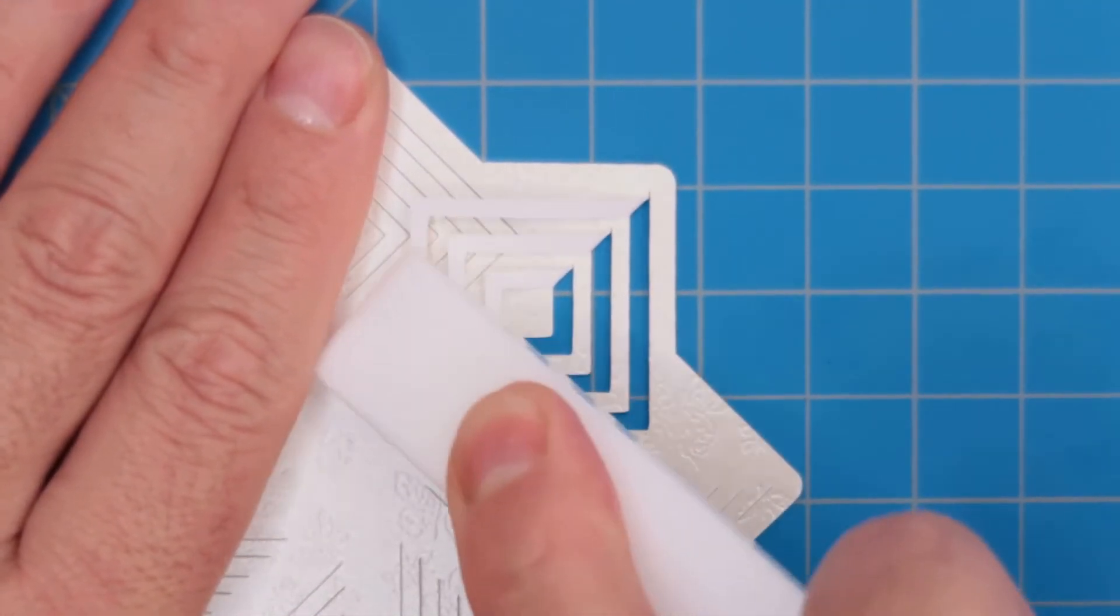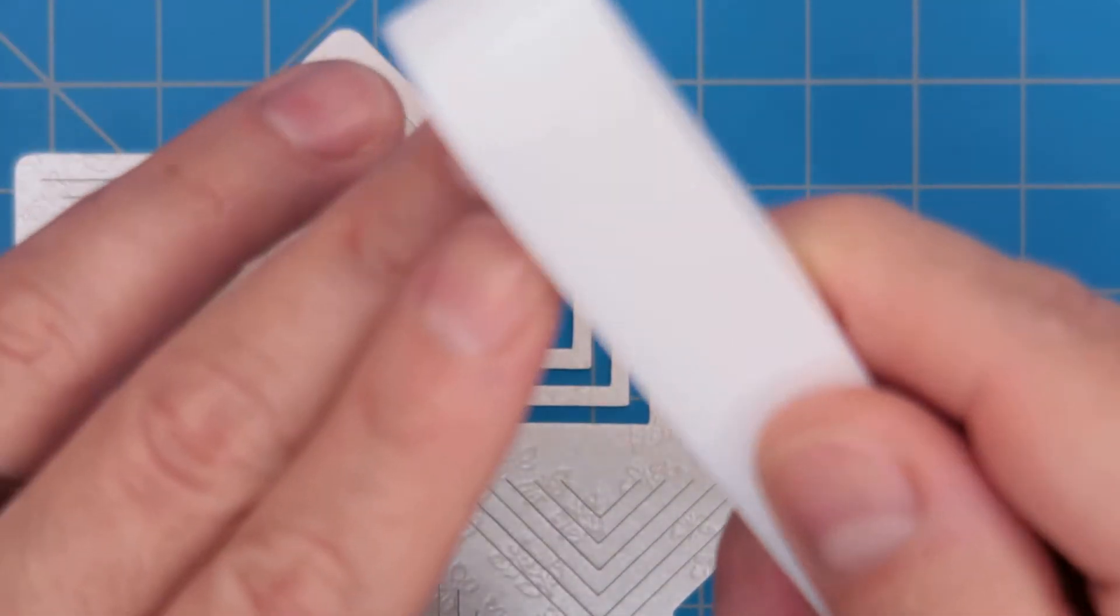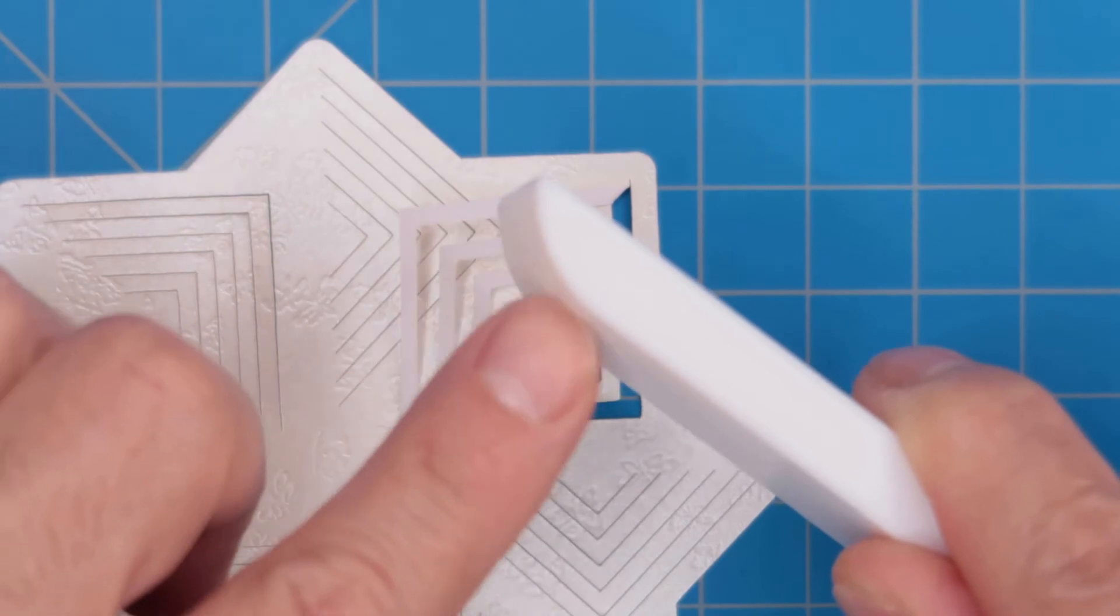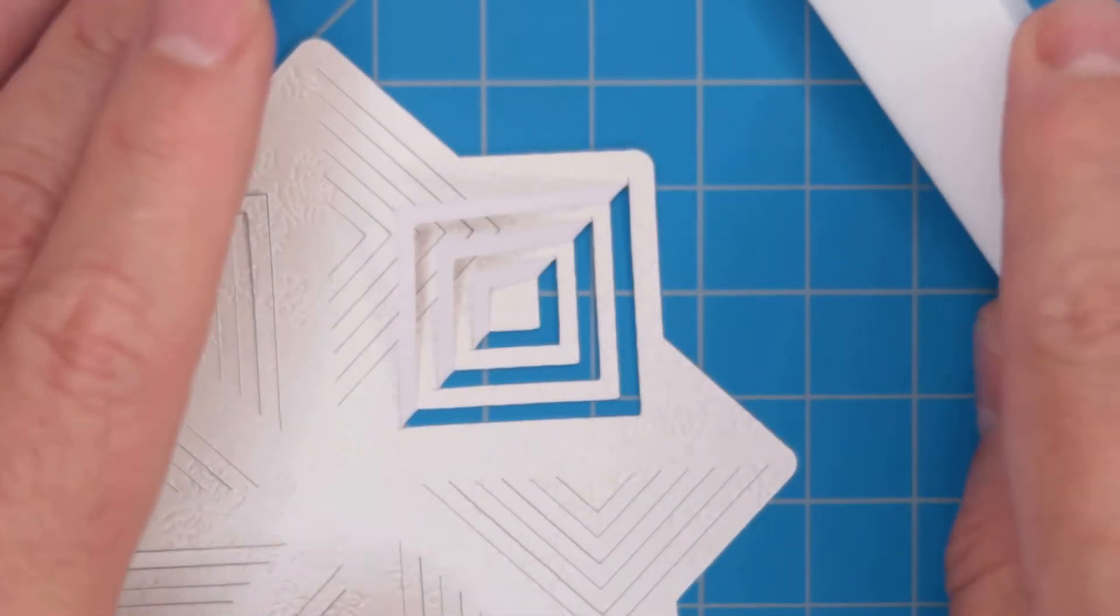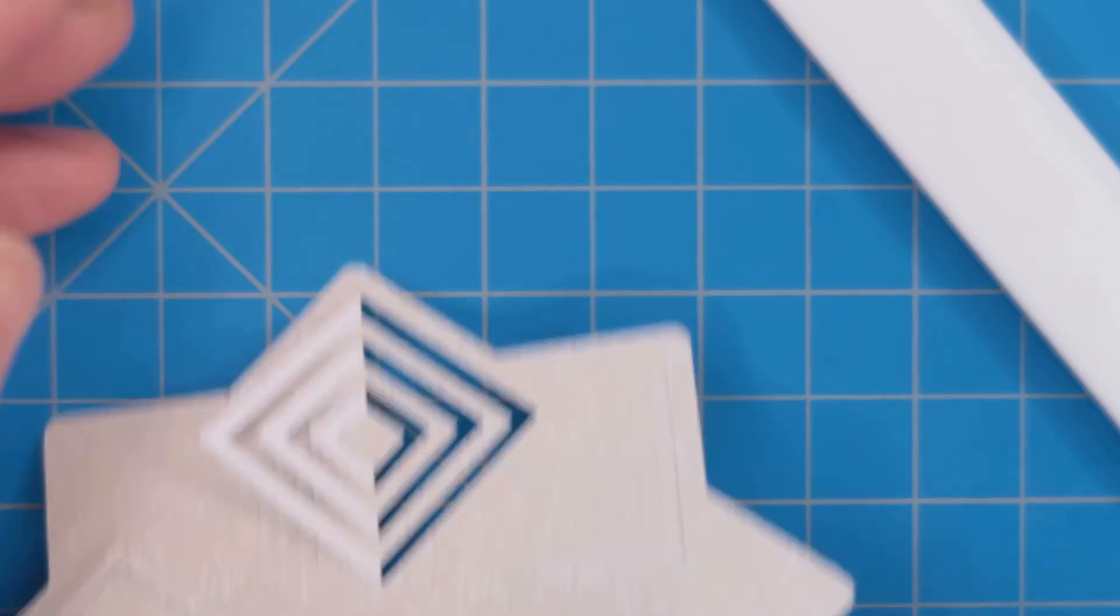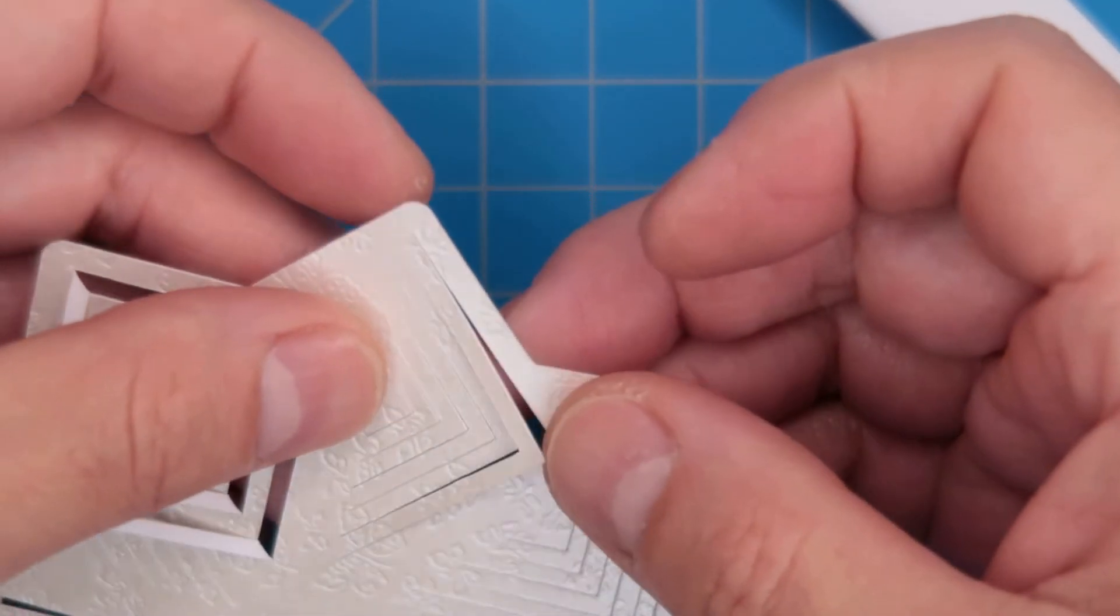Use a bone folder to make those creases very sharp so that they stay down. I am using a Teflon bone folder that has a round edge and that is great for this project. Remember that all the products I use are linked on the video description below.